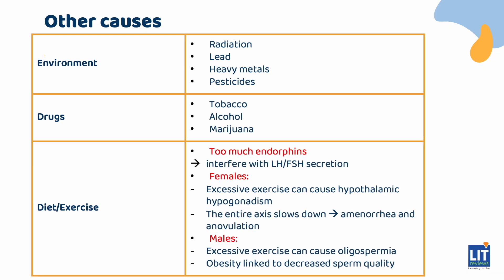This slide covers causes that affect males and females non-specifically. Environmental factors like radiation, lead, heavy metals, and pesticides can all interfere with gonadal function. Drugs like tobacco, alcohol, and marijuana can also interfere with sperm function and ovulation. Diet and exercise can cause problems with the axis — excessive exercise in females can cause hypothalamic hypogonadism with amenorrhea and anovulation. In males, the manifestation may be oligospermia or decreased sperm count. Obesity can cause similar problems.